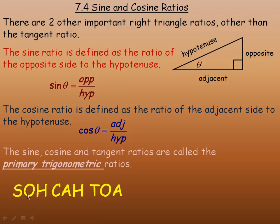So SOH means sine is the opposite side divided by the hypotenuse side. C-A-H, the CA in the middle, stands for cosine is adjacent over hypotenuse. And the last three letters in the end, T-O-A, stand for tan is the ratio of the opposite over the adjacent side.